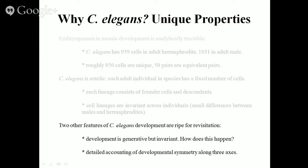There are two features of development in C. elegans that are ripe for revisitation. We understand a lot about the biology of C. elegans development — the lineages, the number of cells generated — but we don't know, for example, how development is generative and invariant. How do we get this type of development in C. elegans versus in humans? And we don't really understand the developmental symmetry along the multiple axes of the phenotype — how development unfolds along the anterior-posterior, left-right, and dorsal-ventral axes.